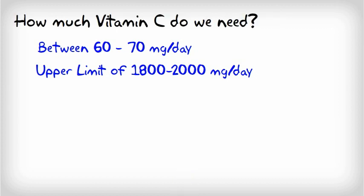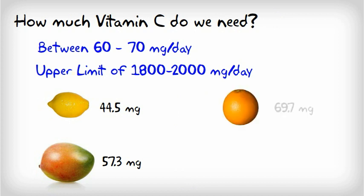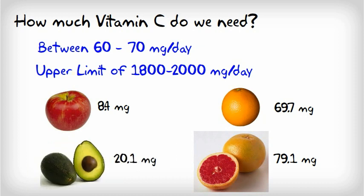So just to give you some perspective, there are 44.5 mg in a lemon, 57.3 mg in a mango, 69.7 mg in an orange, 79.1 mg in a grapefruit, and 8.4 mg in an apple. There's even 20.1 mg of vitamin C in an avocado.